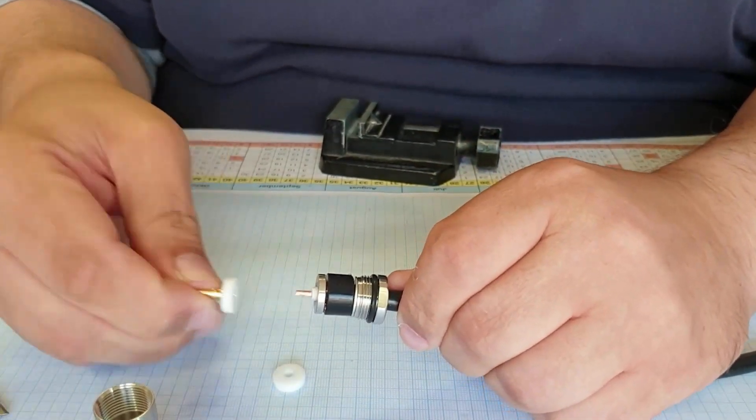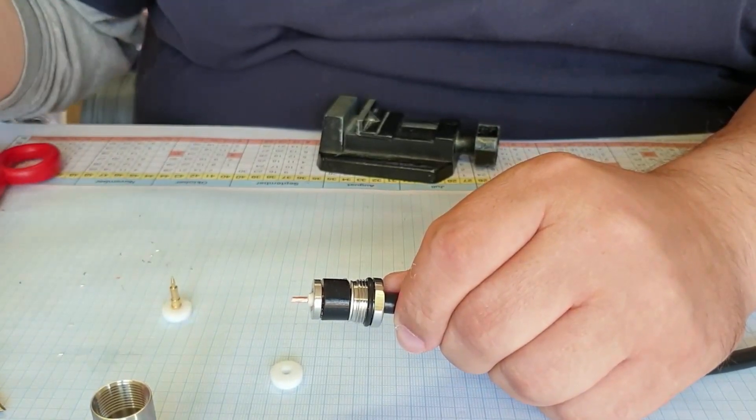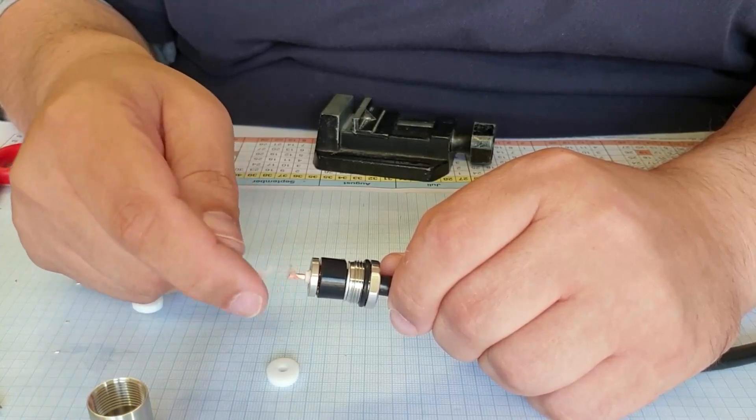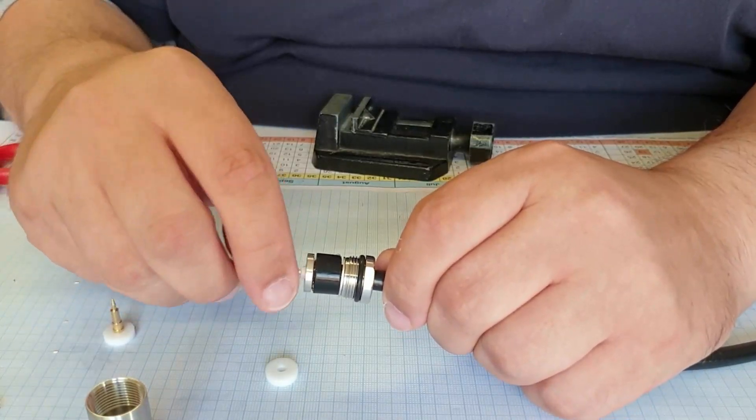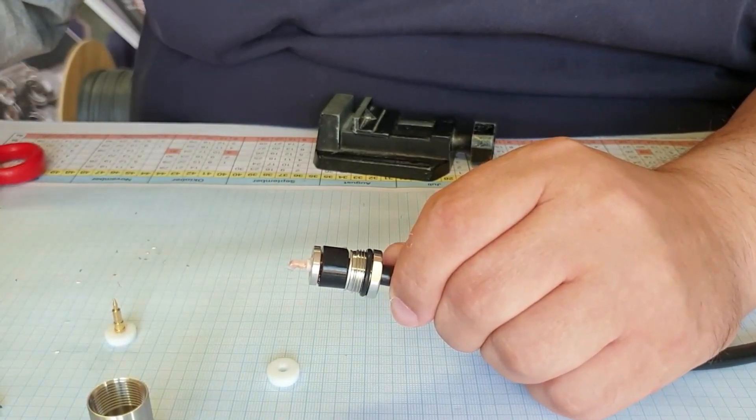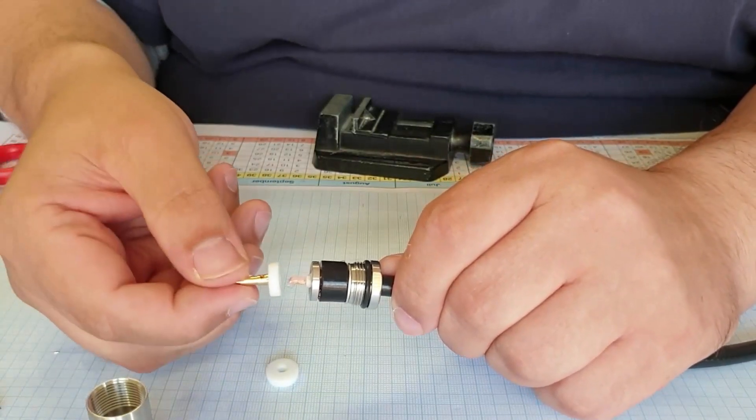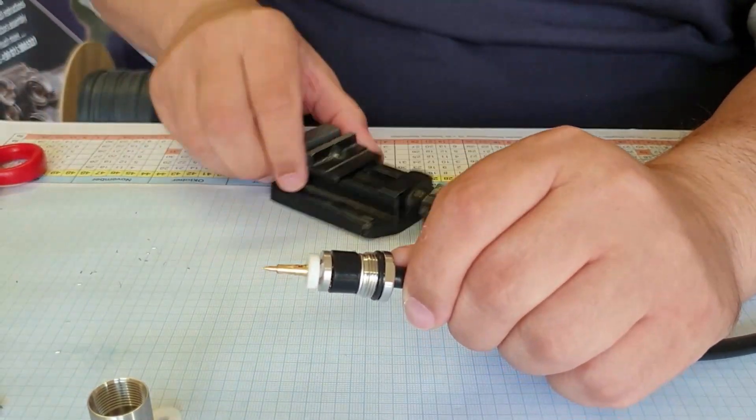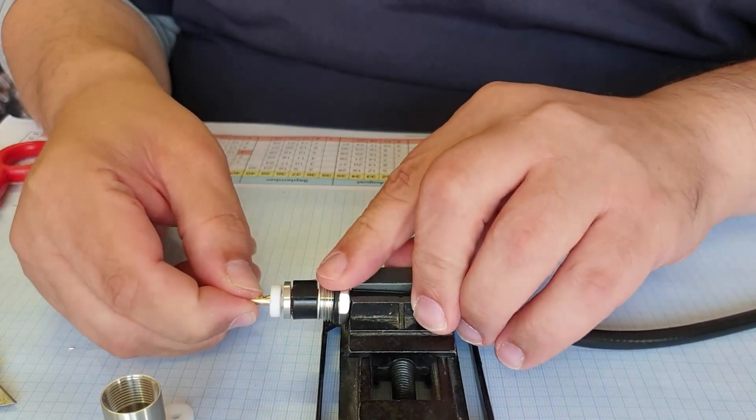So now we take some soldering grease. Yeah, it's not very common anymore, but it really helps that the lead is going through to the cable. Put this over here - a little helper is not bad.